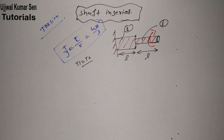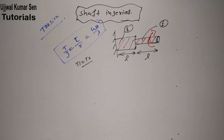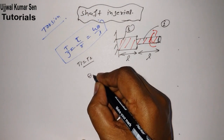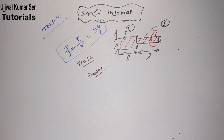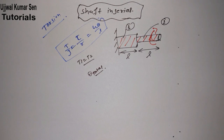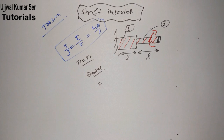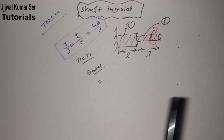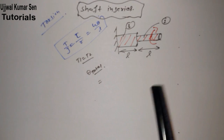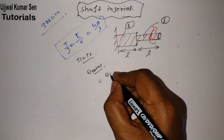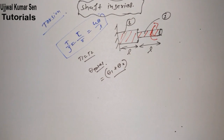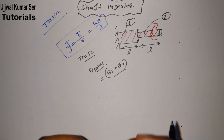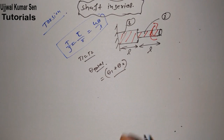So if torque is the same, what do we need to find? We have to find the total angular deformation, or total angle of twist — θ_total. To get θ_total for this series of shafts, we find θ for the first shaft and θ for the second shaft, and add them: θ_total = θ₁ + θ₂.